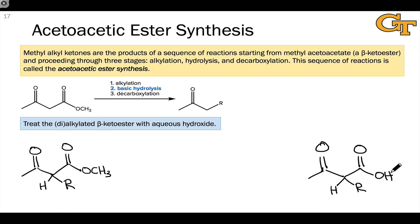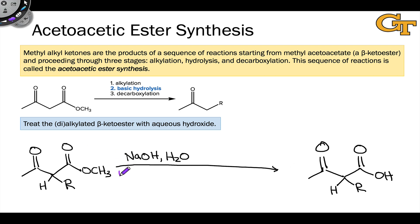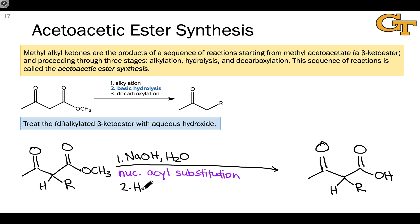If we ignore the ketone and focus on the ester, what's happening is a nucleophilic acyl substitution — the replacement of OCH3 by OH. We accomplish this using aqueous sodium hydroxide; the nucleophile is hydroxide, and the leaving group is methoxide. To generate the neutral carboxylic acid, we use acidic workup, H3O+, in preparation for the next step, which will replace the carboxylic acid group with hydrogen.